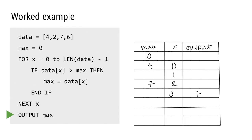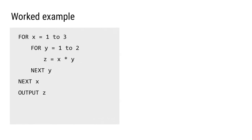If we were asked to describe the purpose of this algorithm, we can look at the variable names for clues. We have a variable called 'max', which probably means maximum. The algorithm goes through each item in the list one by one, and every time it finds a value bigger than the current max, it replaces it. So a good interpretation is: this algorithm finds the largest value in a list of numbers and outputs that largest value.